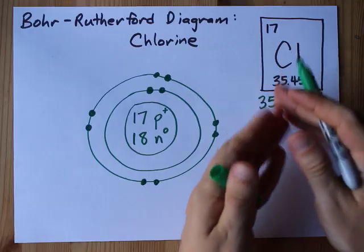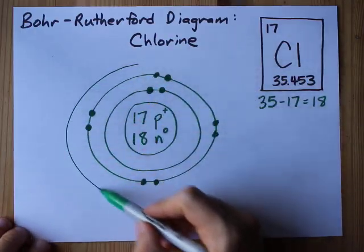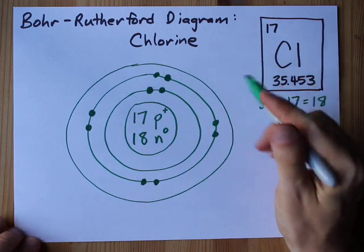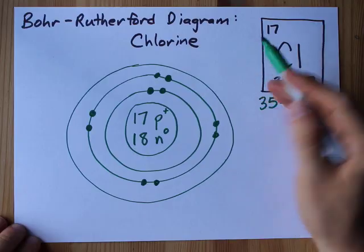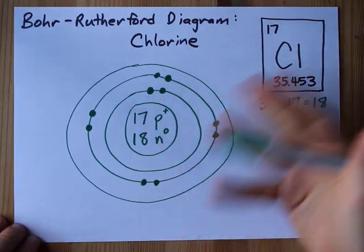But again, I need 17. I need 7 more. The third shell generally holds up to 8. That's going to be enough for me. As long as your atomic number is 20 or less, the third shell holds up to 8. That's the rule.